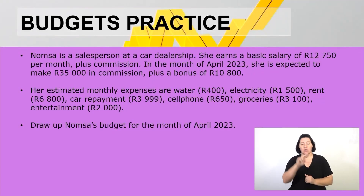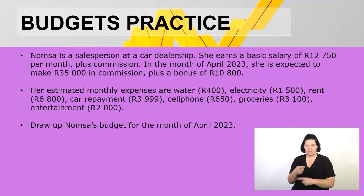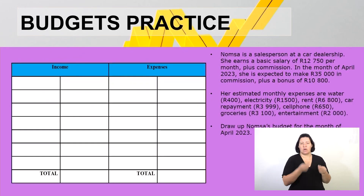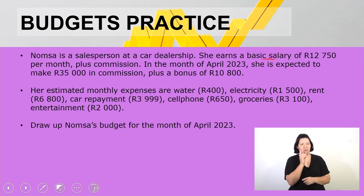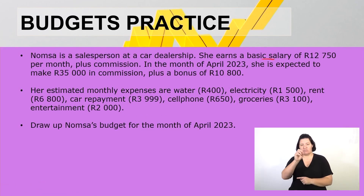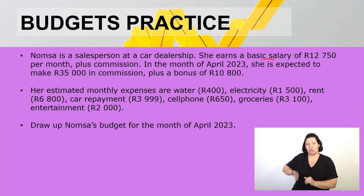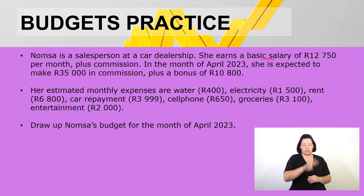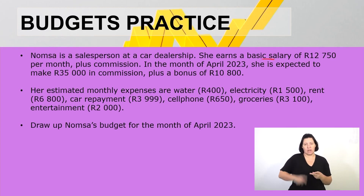Let's look at the first practice sum. Nomsa is a salesperson at a car dealership. She earns a basic salary of 12,750 rand per month plus commission. In the month of April 2023 she is expected to make 35,000 rand in commission plus a bonus of 10,800 rand.